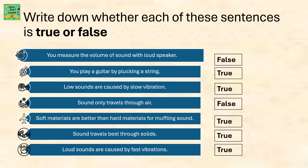The next one is: soft materials are better than hard materials for muffling sound. Sound travels best through solids. Loud sounds are caused by fast vibrations.